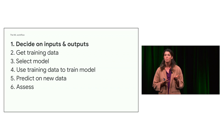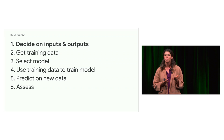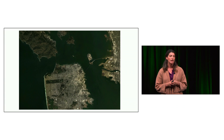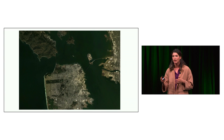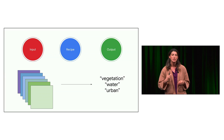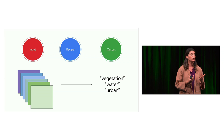Let's take the land cover problem and decide on inputs and outputs. We're working with a Landsat composite image, and we want to classify every input pixel into one of three output classes: vegetation, water, or urban. In Landsat we're using six spectral bands, so for each pixel we look at the reflectance value in those six bands, and then our model tells us whether the pixel is vegetation, water, or urban.